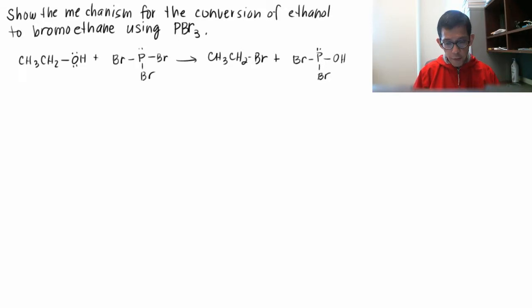Show the mechanism for the conversion of ethanol to bromoethane using phosphorous tri-bromides. Alright, step one.